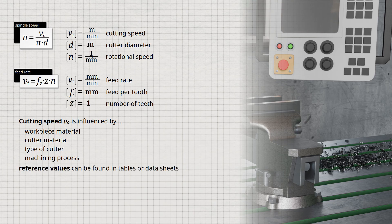With the required cutting speed Vc and the cutter diameter D, the spindle speed N to be set on the machine can then be calculated.